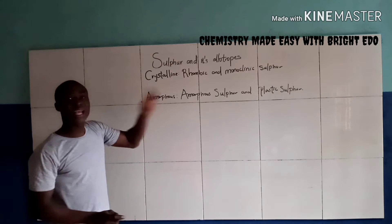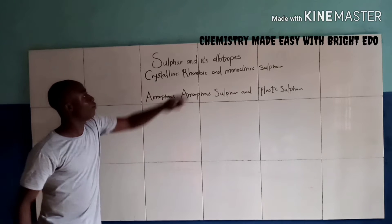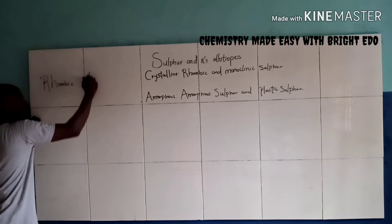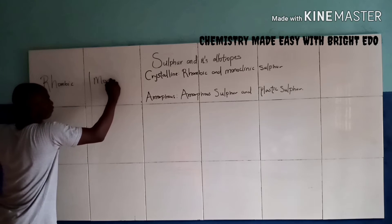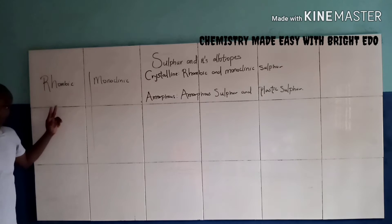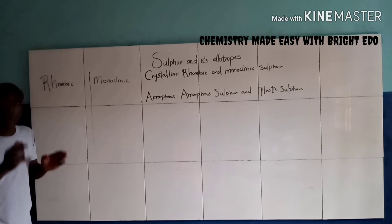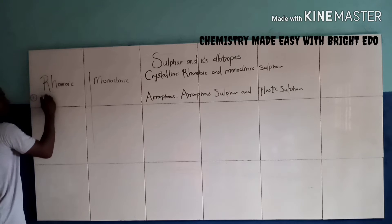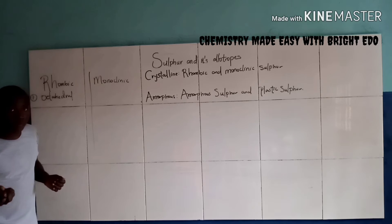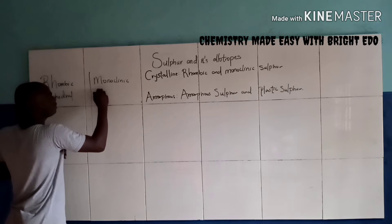Now let's talk about the crystalline Allotrope of Sulfur — Rhombic Sulfur and Monoclinic Sulfur. Rhombic Sulfur has a shape which is octahedral in shape. While Monoclinic Sulfur has a needle shape.